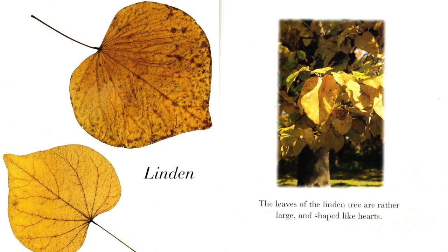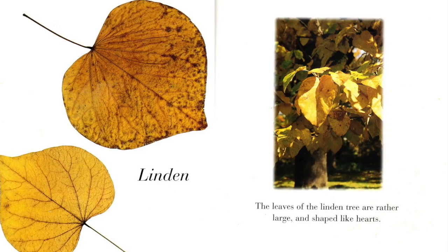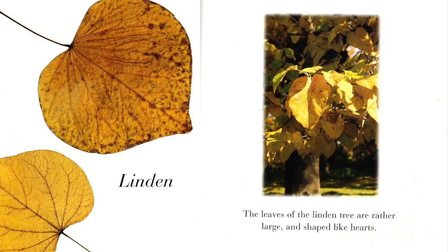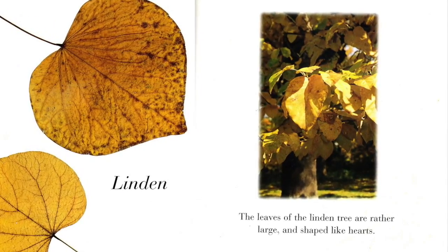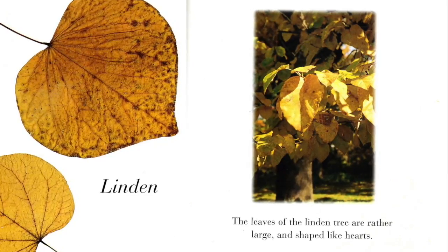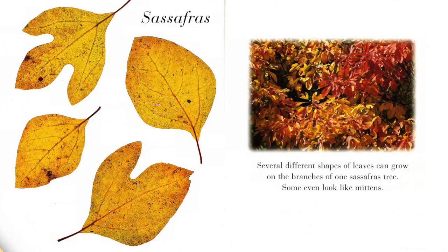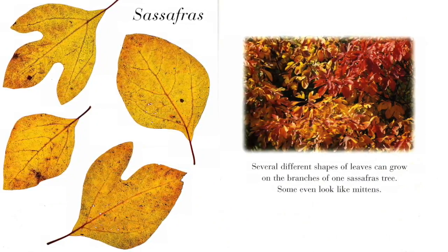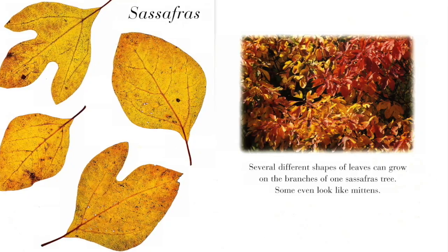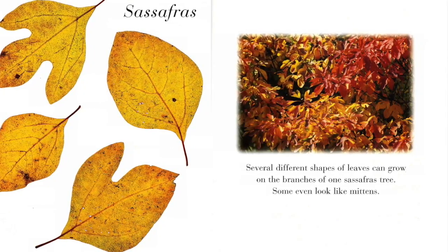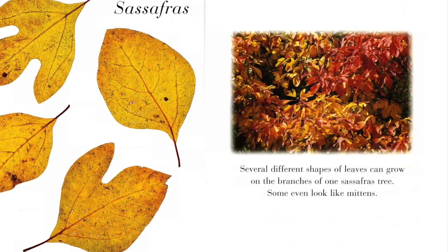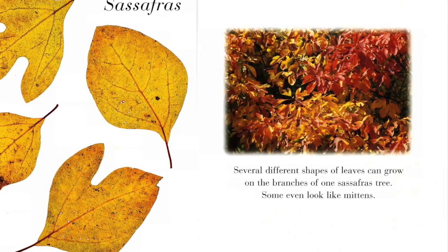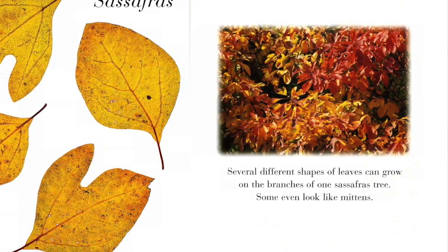Linden. The leaves of the linden tree are rather large and shaped like hearts. Sassafras. Several different shapes of leaves can grow on the branches of one sassafras tree. Some even look like mittens.